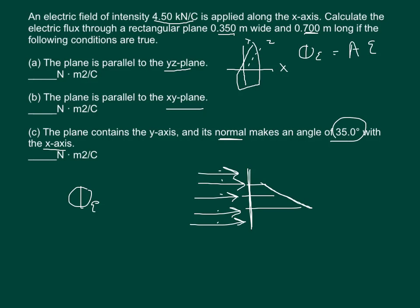Now in part 2, it says it's parallel to the xy-plane, so here's my xy-plane. It may be back behind the xy-plane, it doesn't matter where it's at. It's parallel to the xy-plane, so nothing on this x-axis is going to travel straight through at a normal angle. So this is going to be 0.